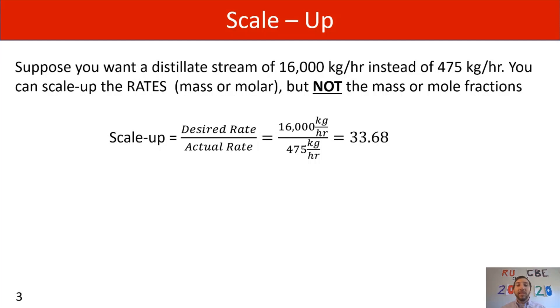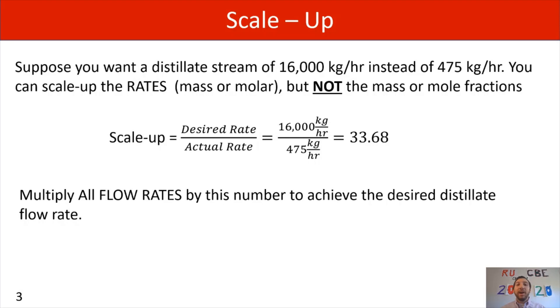Now that we have our scale-up factor, what we can do is multiply all the flow rates by the scale-up factor to achieve our desired distillate flow rate. So let's start with our stream 1, which is our feed stream. We knew that it has a total flow rate of 1,000 kilograms per hour. And now we're going to multiply by our scale-up factor of 33.68. And from there, we're going to have a new total molar flow rate for our feed stream of 33,680 kilograms per hour.